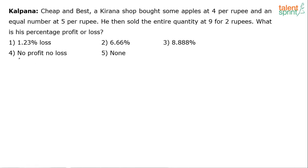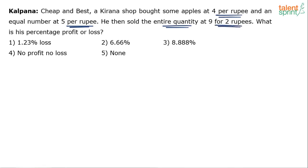Understand — the apples are being bought in two different transactions. In one transaction he has bought 4 apples per rupee, and an equal number of apples at 5 apples per rupee. He then sold the entire total quantity at 9 apples for 2 rupees. So what would be the percentage profit or loss?